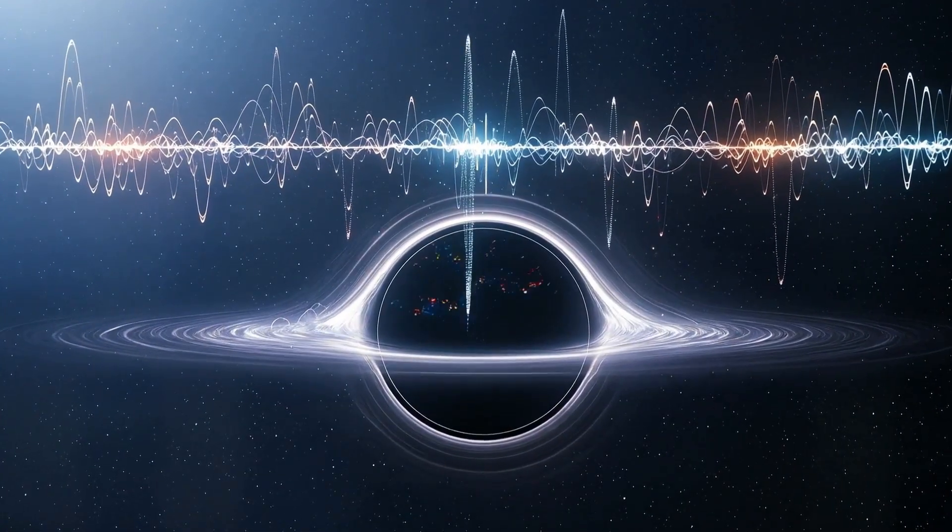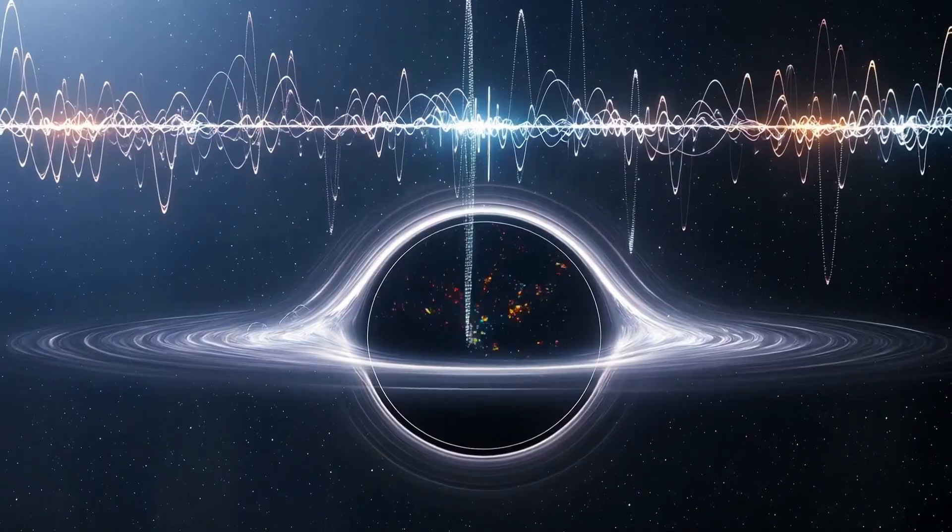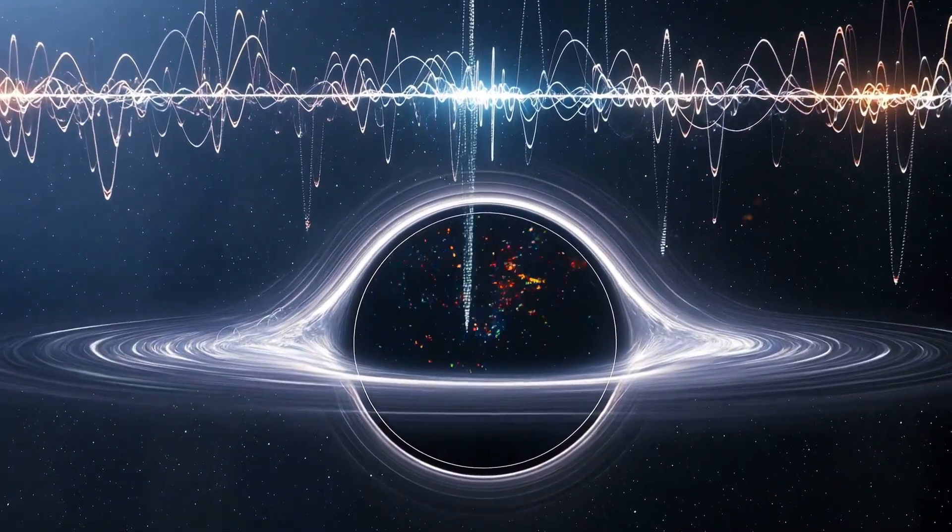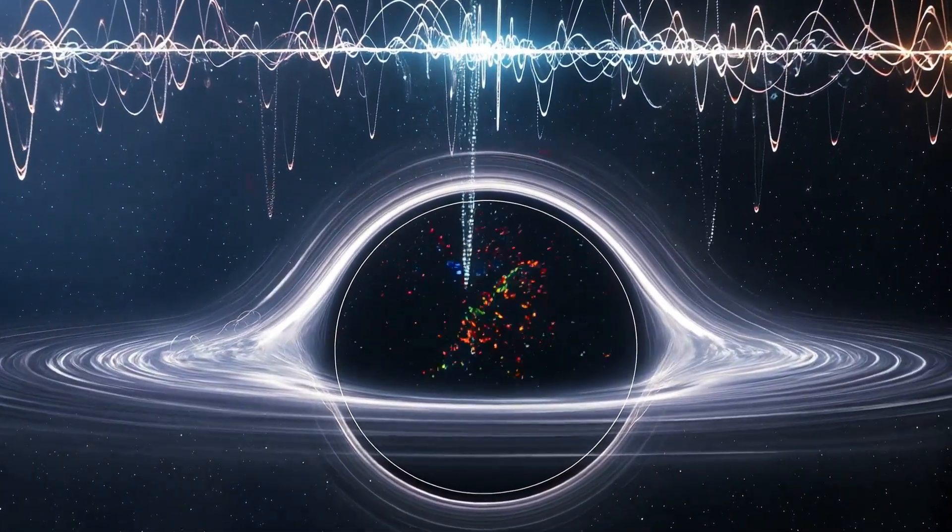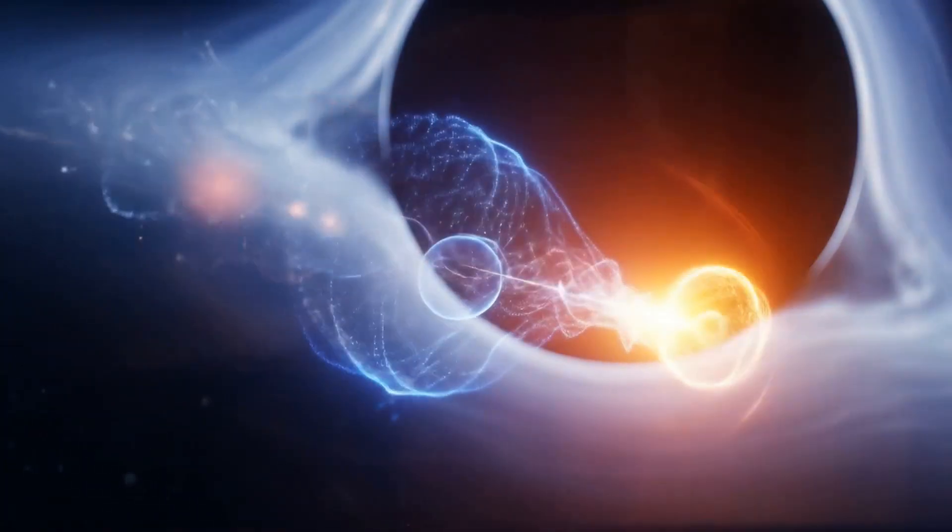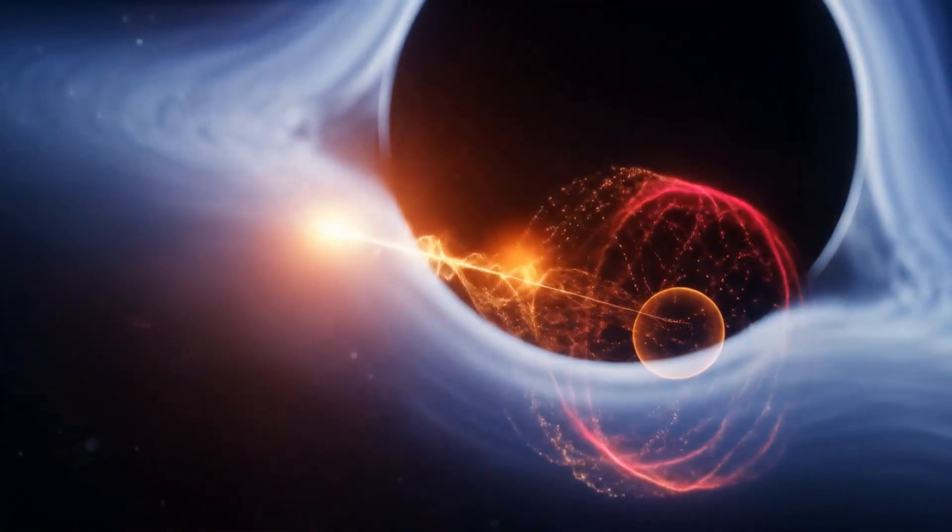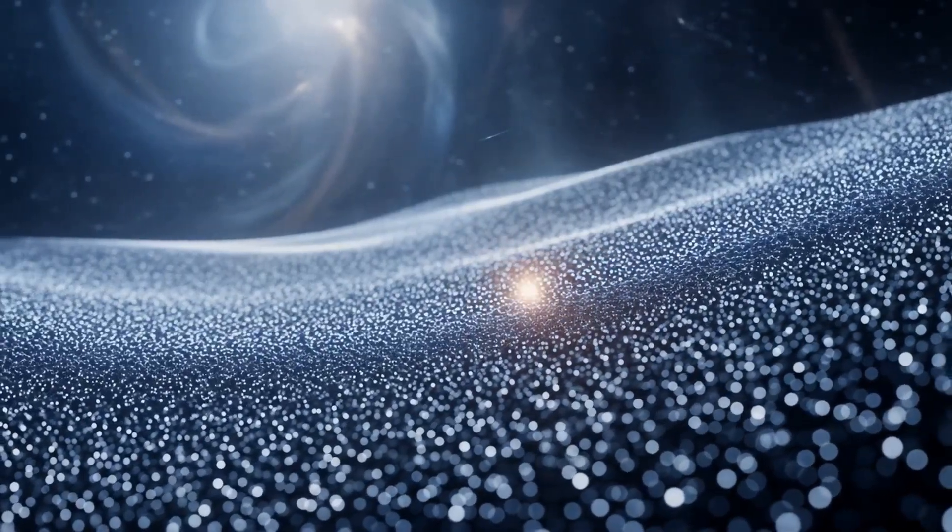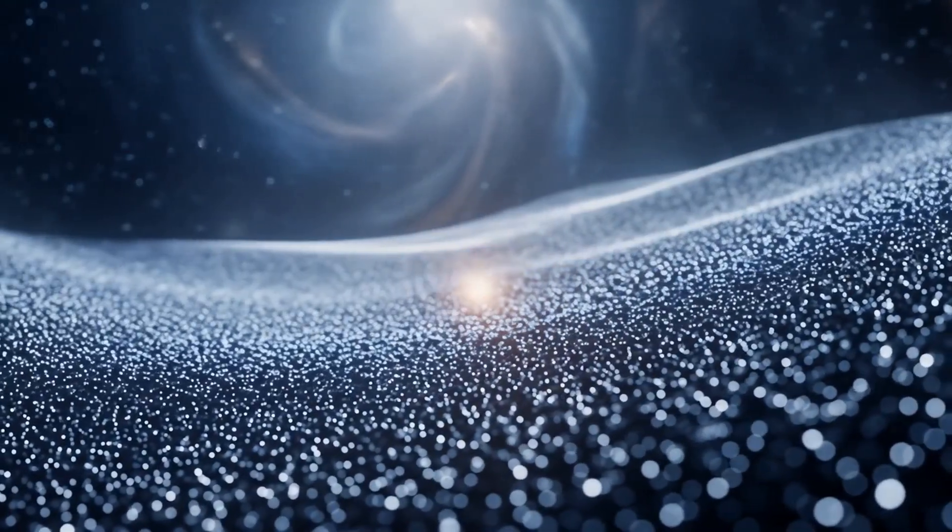At the edge of each black hole, what you call Hawking radiation appears. This is not a side effect. It is the mechanism. Virtual particles pop into existence due to quantum fluctuations. One falls into the black hole. The other escapes, but they remain entangled.